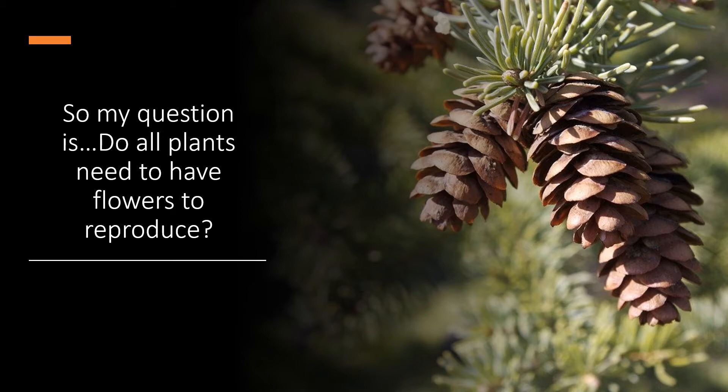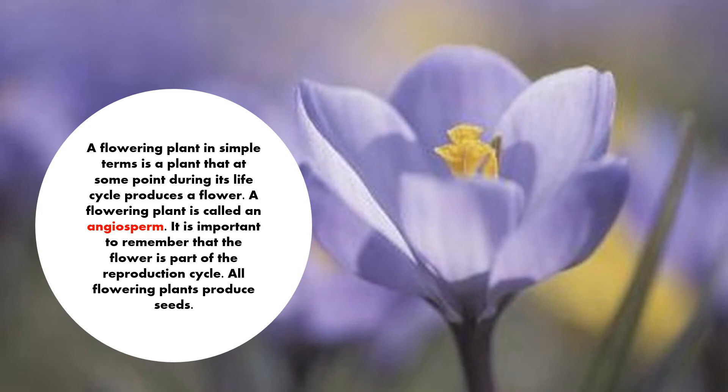Maybe that picture there is a clue. A flowering plant, in simple terms, is a plant that at some point during its life cycle produces a flower. A flowering plant is called an angiosperm. Remember that word — angiosperm. It is important to remember that the flower is part of the reproduction cycle. All flowering plants produce seeds.